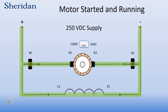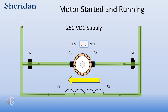The flow of current is from the negative of the supply to the positive — that is, from right to left. As the armature accelerates, the counter-EMF increases and opposes this flow of current. The counter-EMF is just the voltage generated by the armature as it rotates in the magnetic field of the shunt.